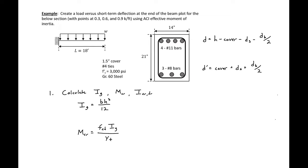In this example problem, we're going to create a load versus short-term deflection plot at the end of the beam for the section below. We're given three points to find: 0.3, 0.6, and 0.9 kip per foot distributed load, and we're going to use the ACI effective moment of inertia procedure.